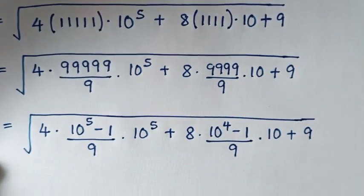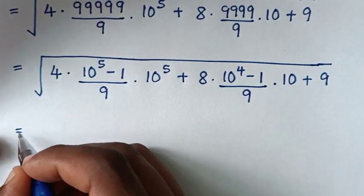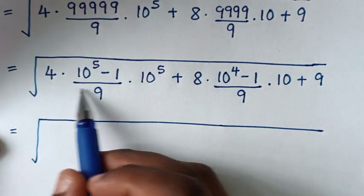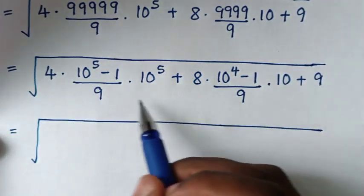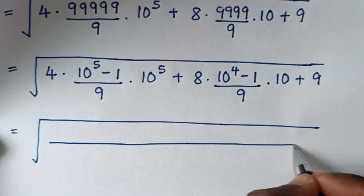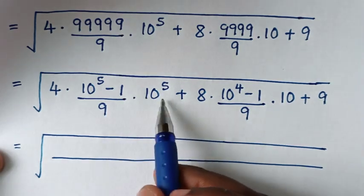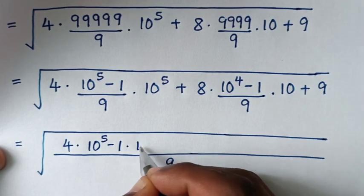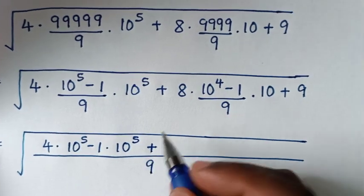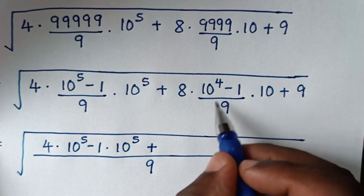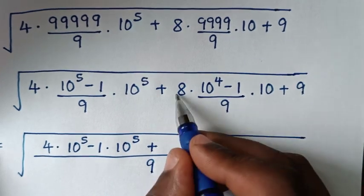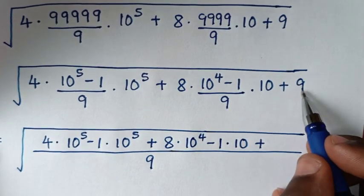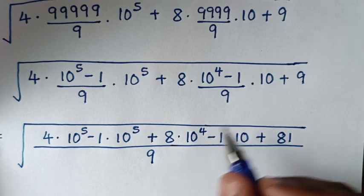In the next step, we want to make a common denominator of 9 for the entire numerator. The common denominator is 9. So it will be: 4 times (10 to the power of 5 minus 1) times 10 to the power of 5, plus 8 times (10 to the power of 4 minus 1) times 10, plus 9 — which is 81 over 9, and 81 divided by 9 is 9 — all over 9.